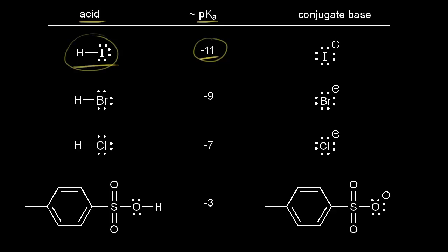And the stronger the acid, the more stable the conjugate base. So the conjugate base to HI is I minus, the iodide anion. And since this is the conjugate base to the strongest acid, this is the most stable base on the table.